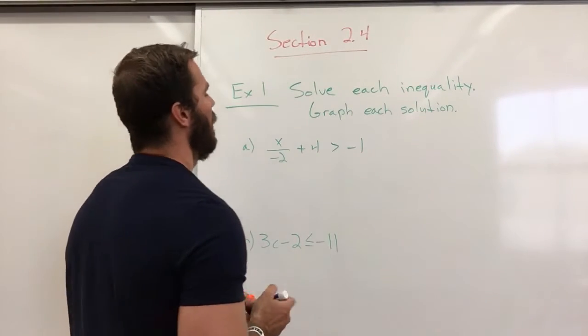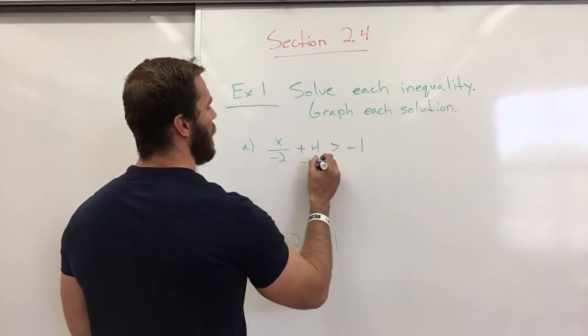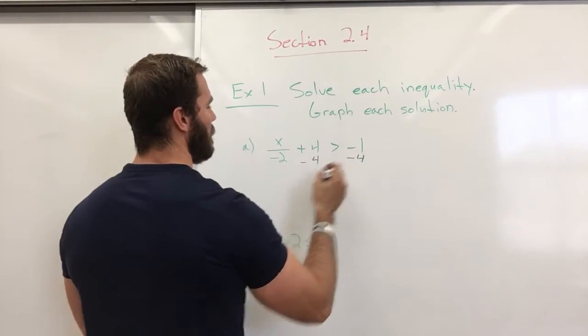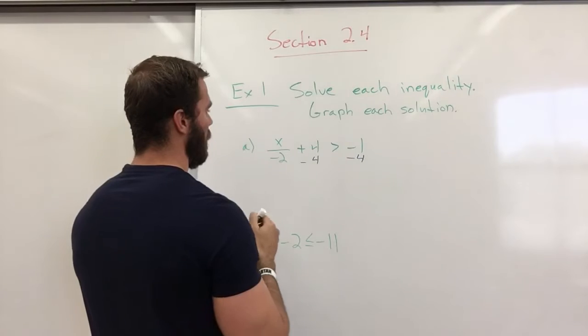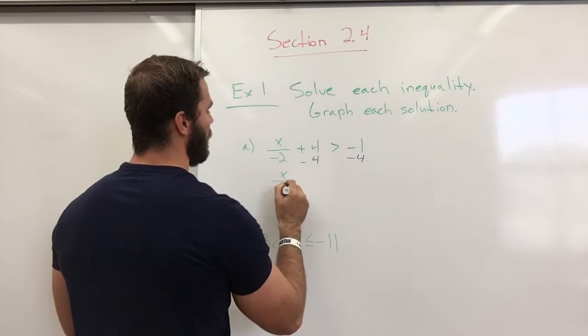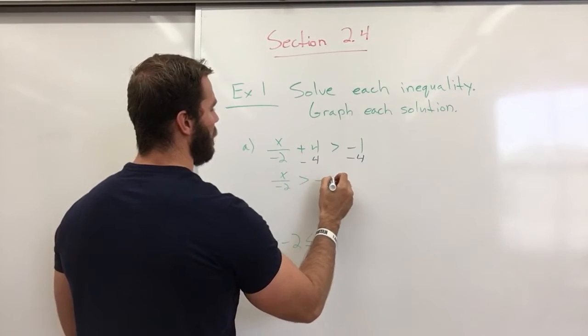Here we go. I'm going to subtract 4 on both sides. And I have x over negative 2 is greater than a negative 5.